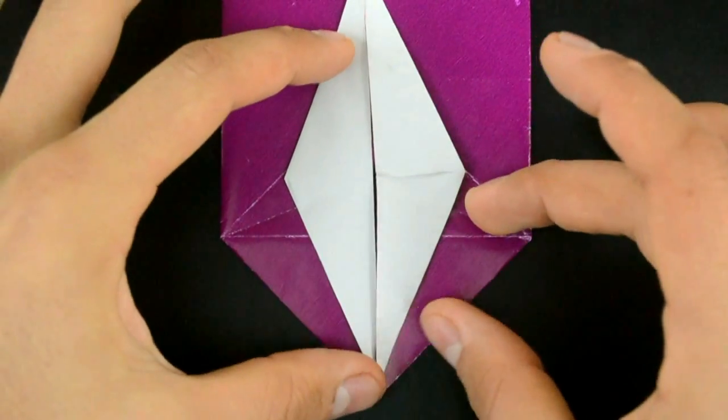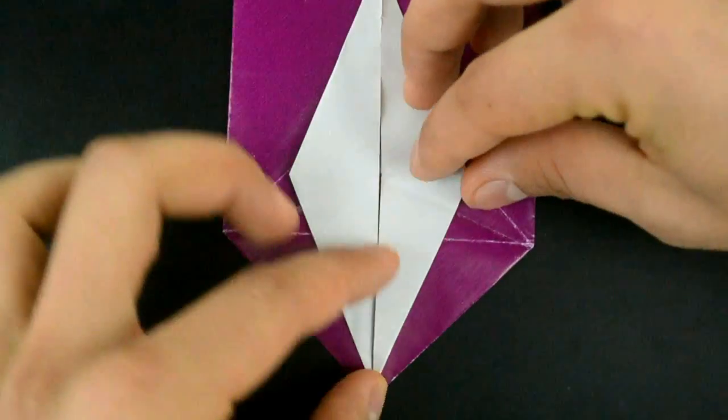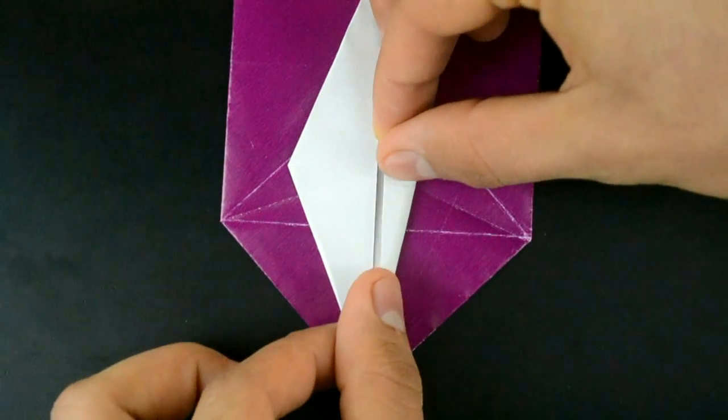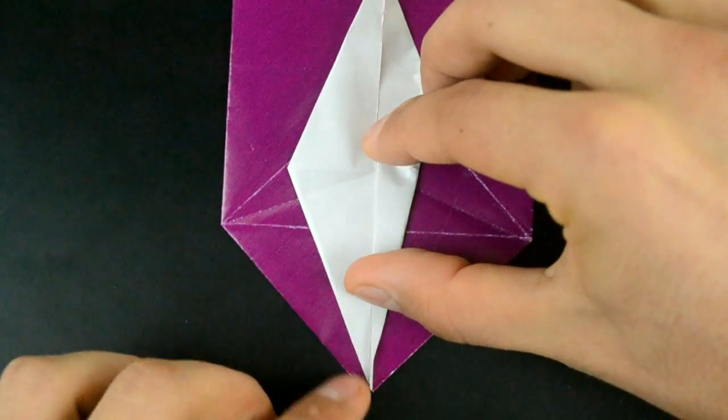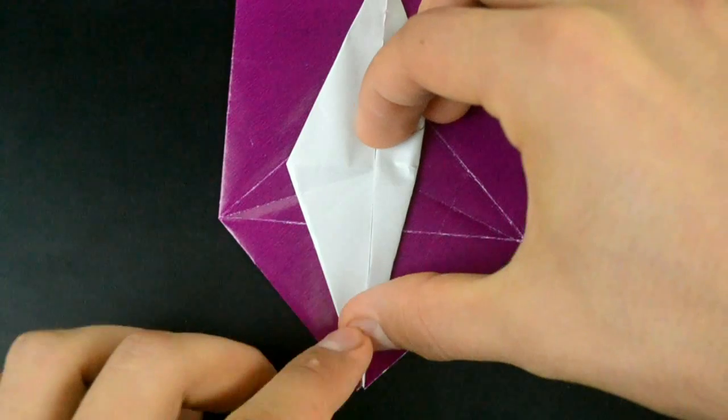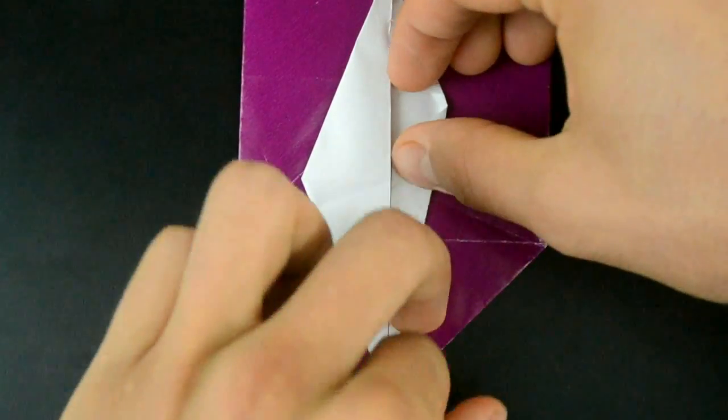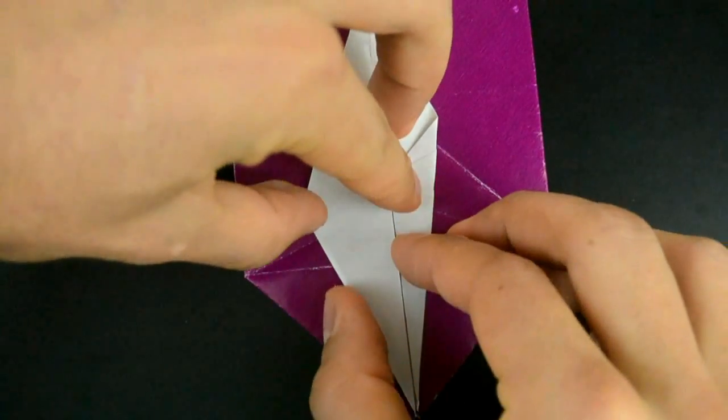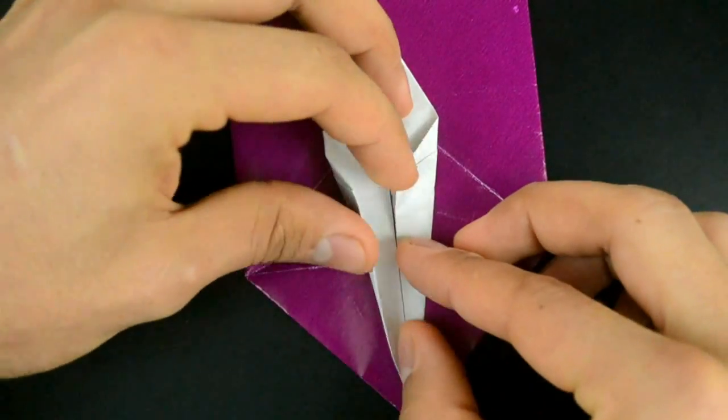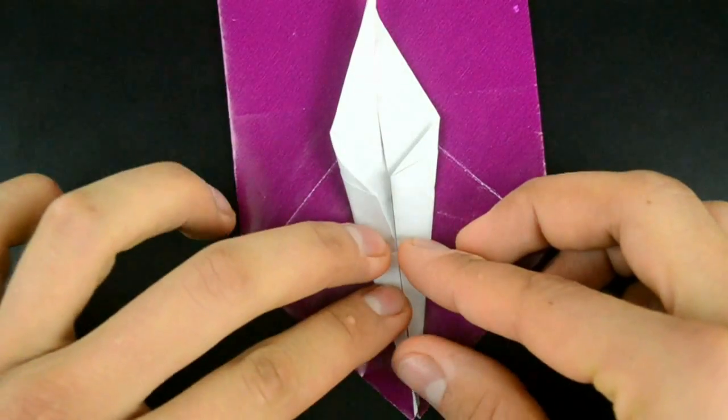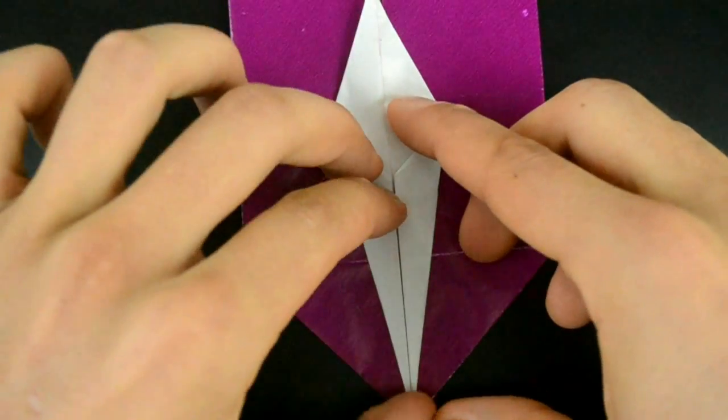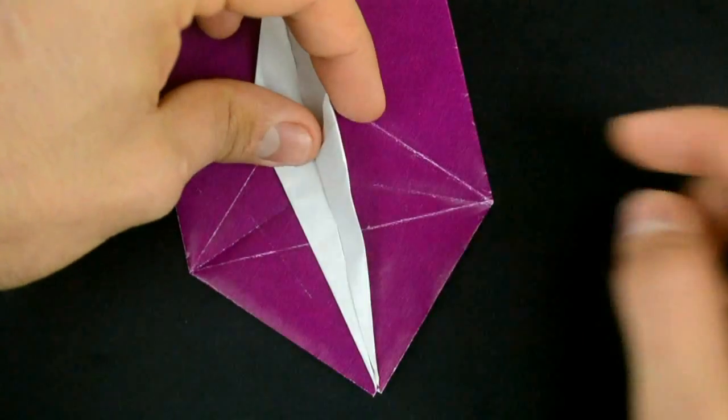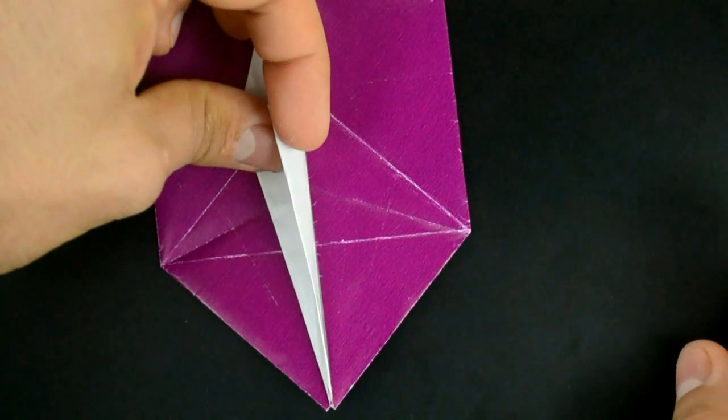And fold this edge here to the middle. And fold this edge on the right side, and using the last crease we did, fold this flap up.